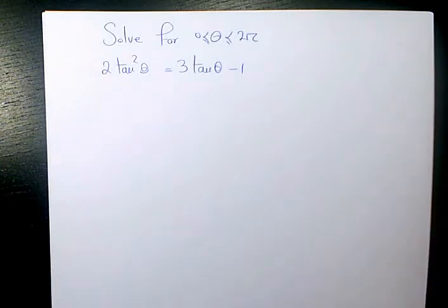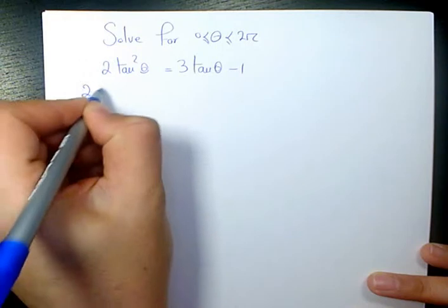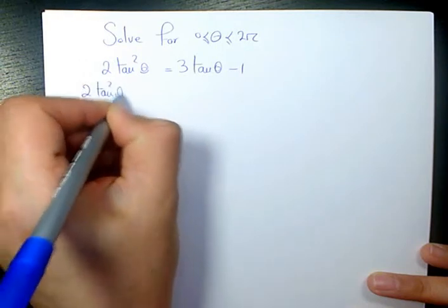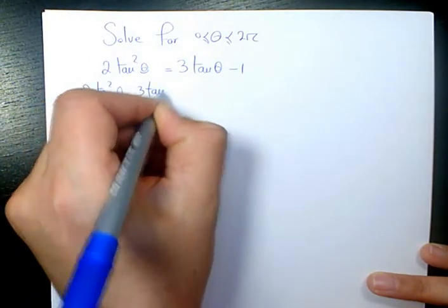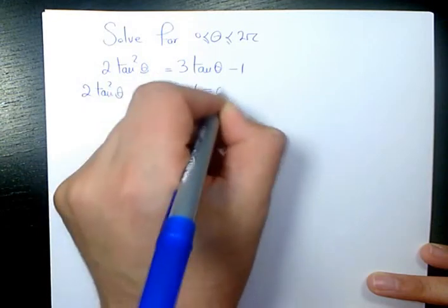In this video I want to show you how to solve this trigonometric equation which is 2 tan²θ = 3 tan θ - 1. I need to move these two to the left hand side so it will be 2 tan²θ - 3 tan θ + 1 = 0.